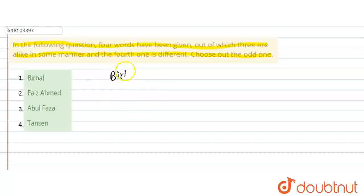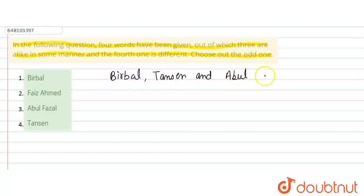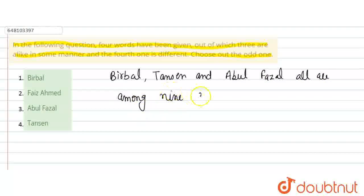यहाँ पे Birbal, Tan Singh, और Abul Faisal — they all are among the nine gems of Akbar. Abbar के नौरतन में से तीन हैं यह लोग, among nine gems of Akbar.